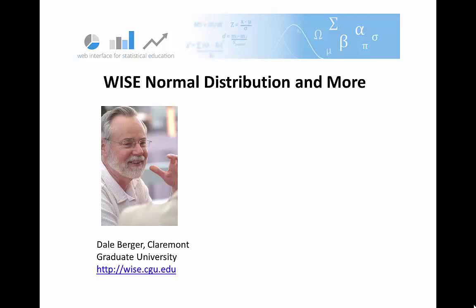Welcome to 'Why's Normal Distribution and More.' The normal distribution is the most important distribution in much of statistics, but why is that? One might think it's because many distributions are normal in shape and that this describes a lot of distributions. But in fact, that's not true — very few distributions of things that we measure are really normal.